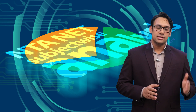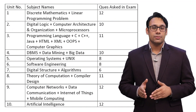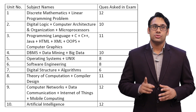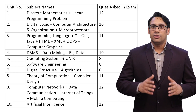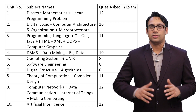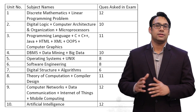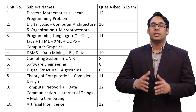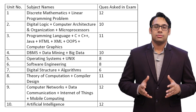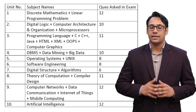Unit 1 includes Discrete Mathematics and Linear Programming — a total of 12 questions. Out of these, Linear Programming accounts for only 1 question, which means Discrete Mathematics becomes extremely important with 11 questions. You cannot leave Discrete Mathematics at all, because its basics apply to other subjects too — algorithms, data structures, probability, permutations and combinations. Discrete Mathematics creates a foundation for your entire preparation.